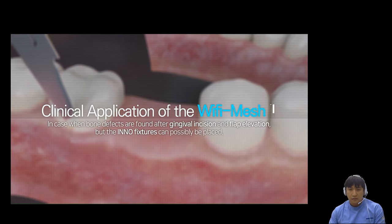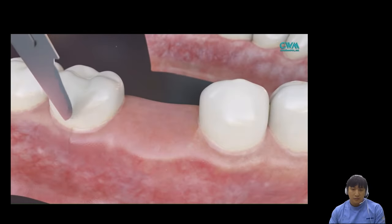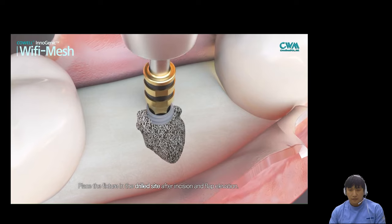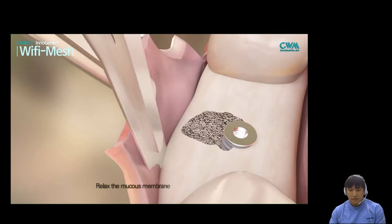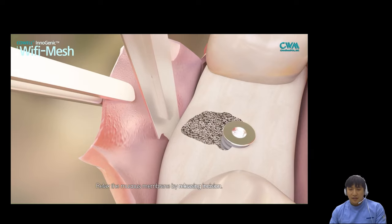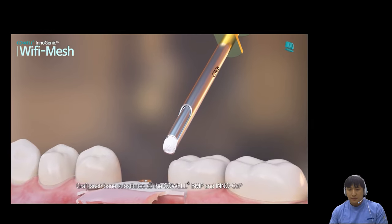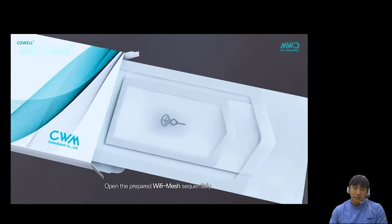In case when bone defects are found after gingival incision and flap elevation, the implant fixtures can possibly be placed. Place the fixture in the drilled site after incision and flap elevation. Install the fixed connector to the fixture using the 0.9 hex ratchet driver. Relax the mucous membrane. Releasing incision is very important when you use Wi-Fi mesh. Releasing incision should be performed prior to bone graft to ensure visibility. I will mention it again later in the clinical case.